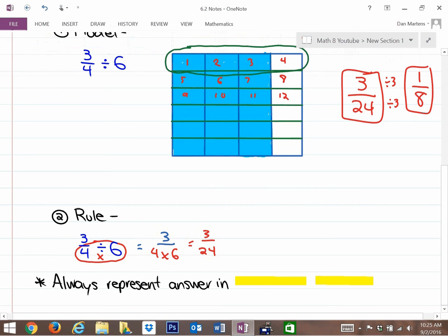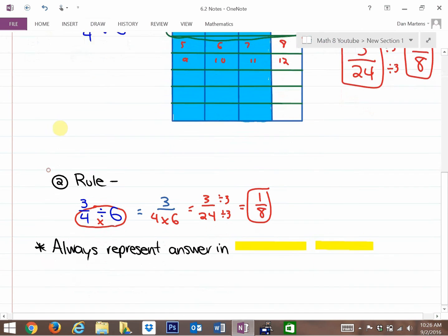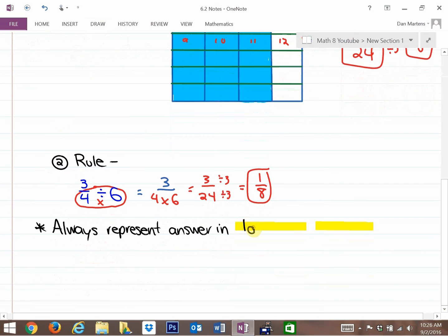The numerator remains the same and is now divided into six parts—there's going to be six times as many parts, which means your answer is 3 over 24. There's your rule, and you could reduce it to become 1/8. The final part of your notes: you should always represent your answer in the lowest terms.